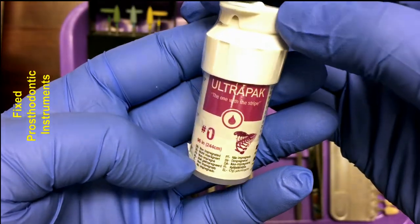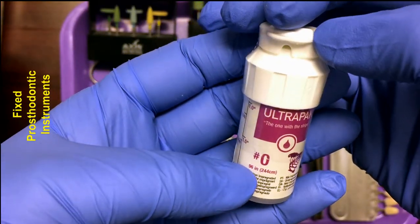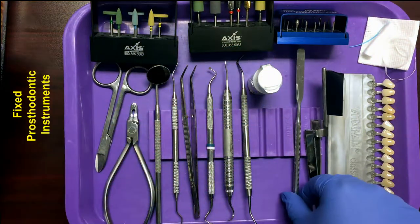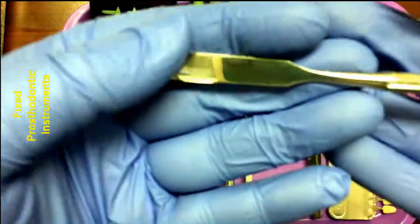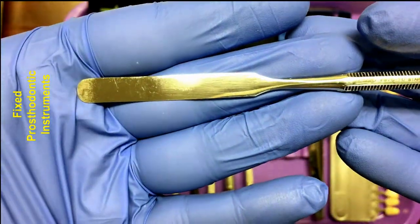Next, we have a cement spatula. A cement spatula is used to mix dental cements. It's used to mix your temporary cement when you're ready to place your provisional crown or bridge and is also used to mix the permanent cement when you're ready to cement the final restoration.